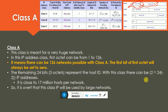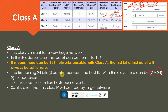In Class A, 24 bits represent the host ID and 7 bits represent the network ID. This gives 2 to the power of 24 minus 2, which is approximately 16,277,214 IP addresses per network. The minus 2 accounts for the network identification address and the broadcast address. The number of possible networks is 2 to the power of 7 minus 2, giving 126 networks.